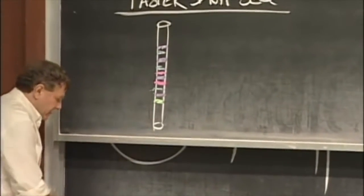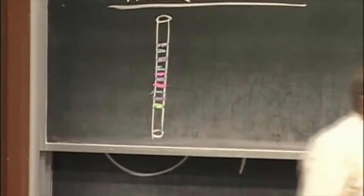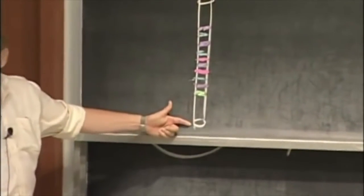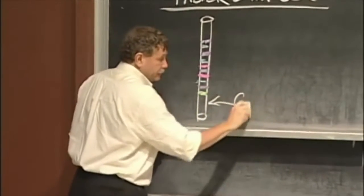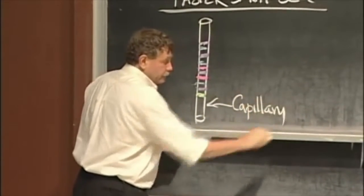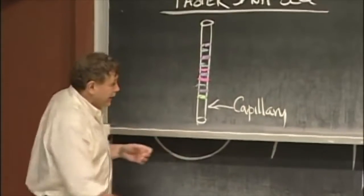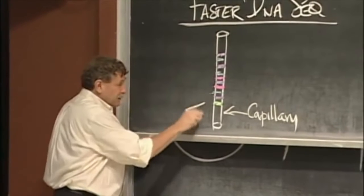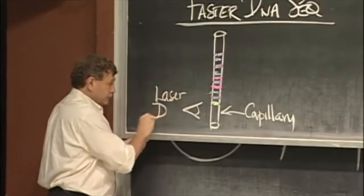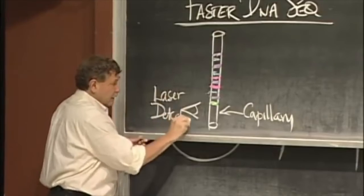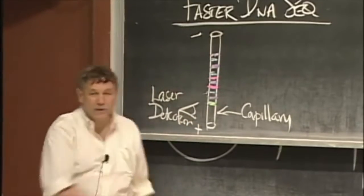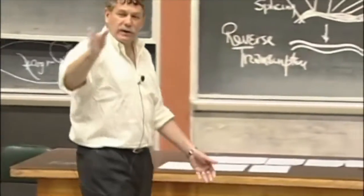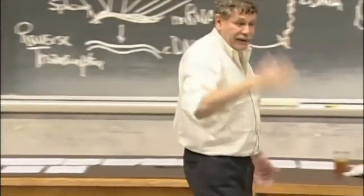Instead of putting this up against a piece of x-ray film, I could do this in a very thin tube called a capillary. Instead of holding it up to an x-ray film, I could just put a laser detector. I turn on the electricity, watch the fragments go by, and just look at it with my laser detector. It shines a light and I see green, red, blue, that's the sequence.